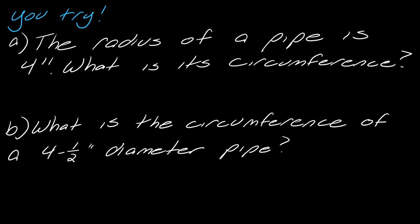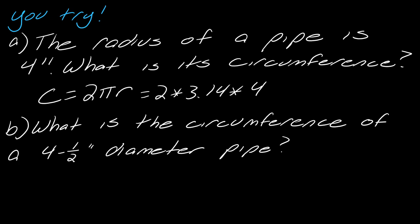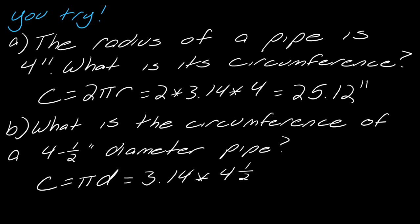For problem A: the radius of a pipe is four inches — what is its circumference? Using 2·pi·r: two times 3.14 times 4 gives 25.12 inches. You could also use pi·d, converting the radius to a diameter of eight. For problem B, we're talking about a diameter of four and a half inches, so using pi·d: 3.14 times 4.5 gives 14.13 inches.